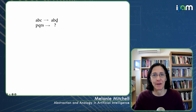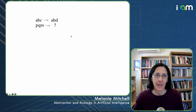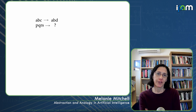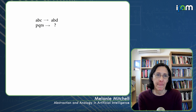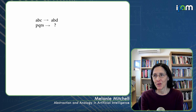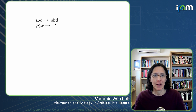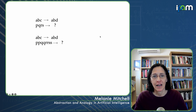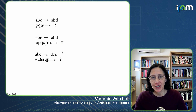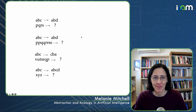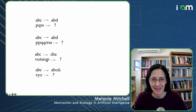Here are some example problems. If ABC changes to ABD, what does the letter string PQRS change to? Most people will say PQRT — replace the rightmost letter by its successor. Of course there are many other possible answers, like PQRD — replace the rightmost letter by a D — or replacing any string by ABD. Those are more literal-minded answers that most humans won't even think of, but there's no rigorous correct answer. Most people agree on what the answer should be, and we can make many variations, like by doubling the letters or some other transformation.